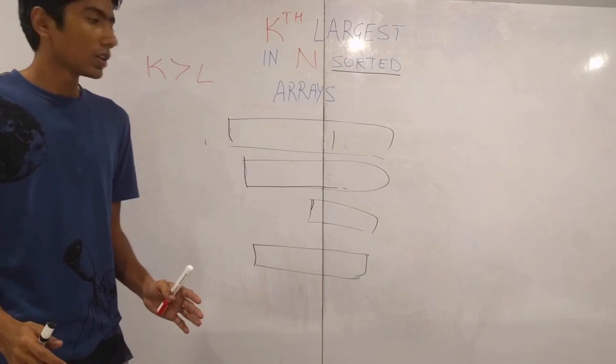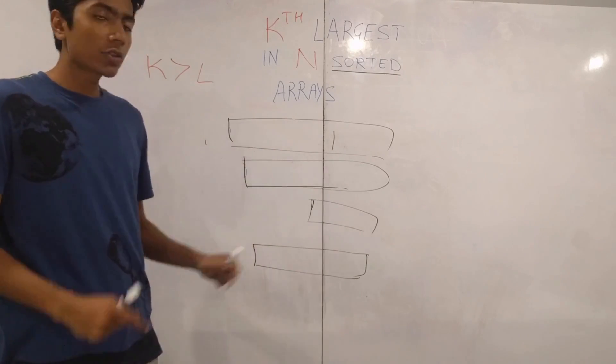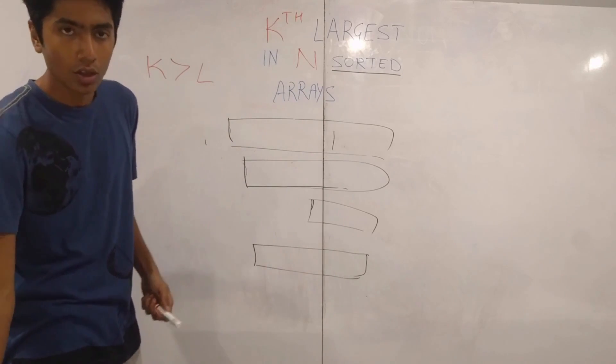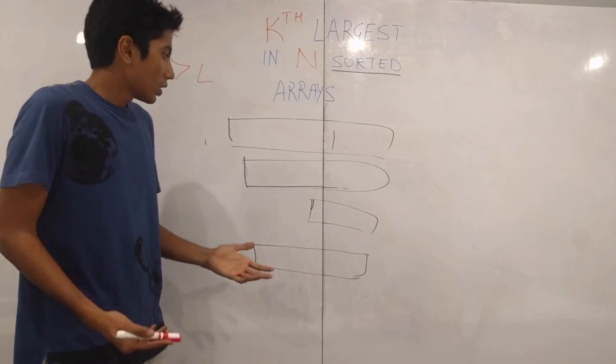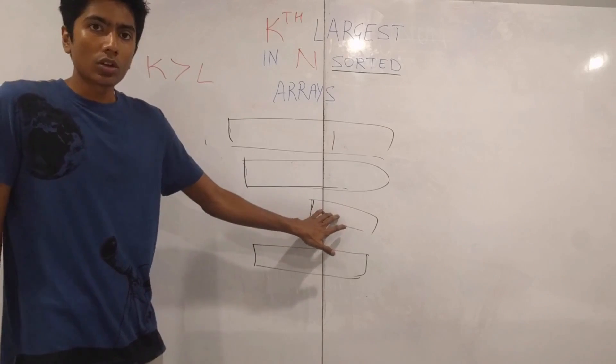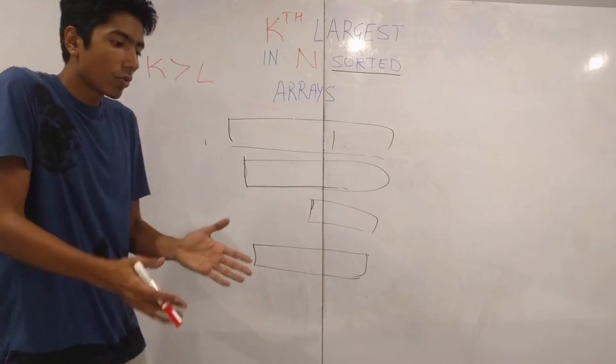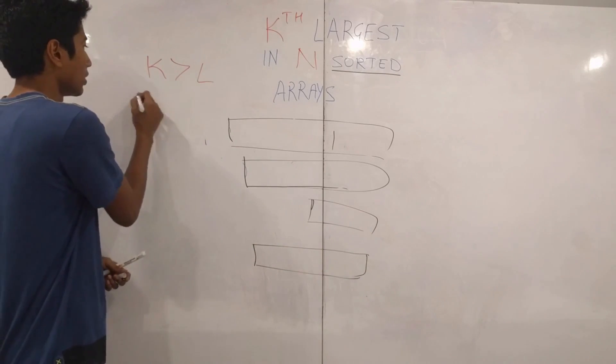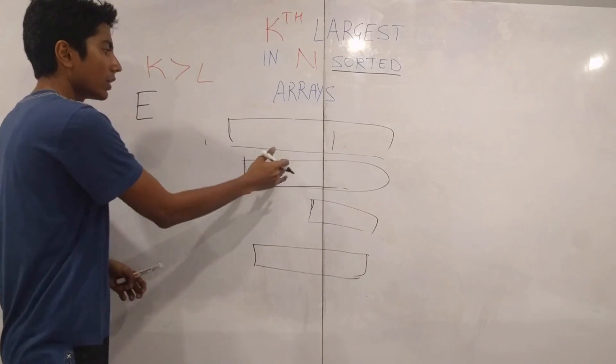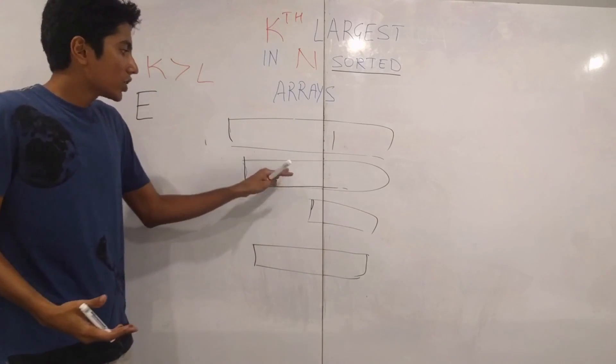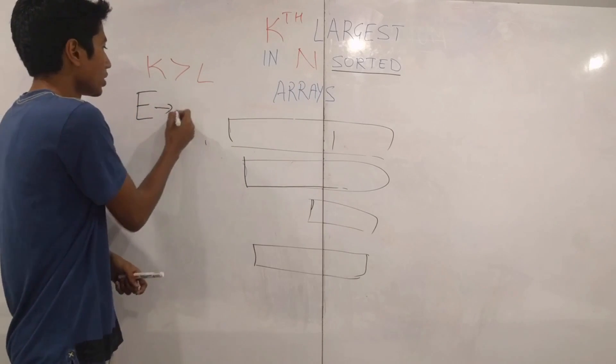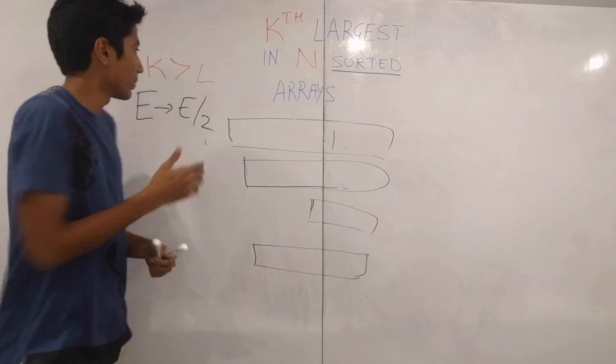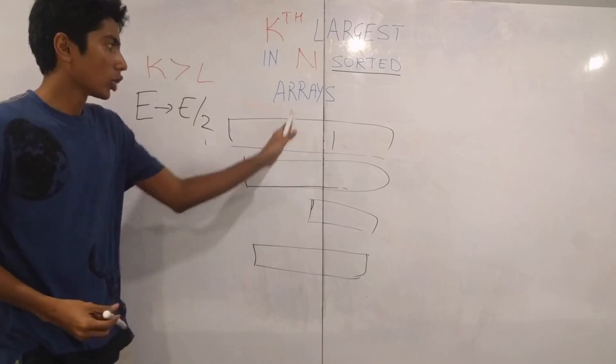What does that mean? Well, in each iteration, you are getting rid of half the elements in the largest array. Even in the worst case, to get rid of half the elements from all the arrays, you need at most n operations. Why? Well, because if this is now not the largest array and you go to the largest one, you remove half the elements from there and so on.